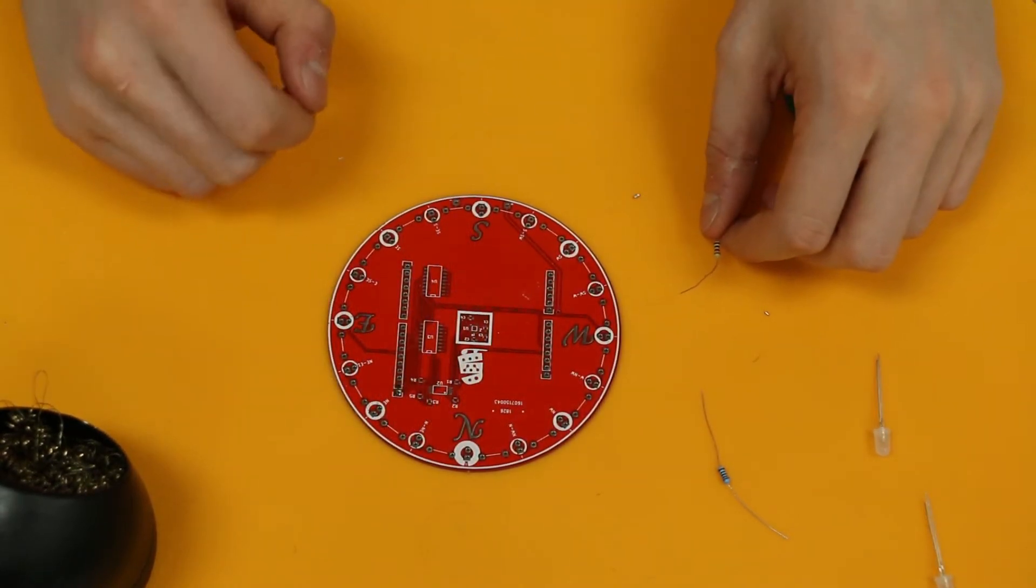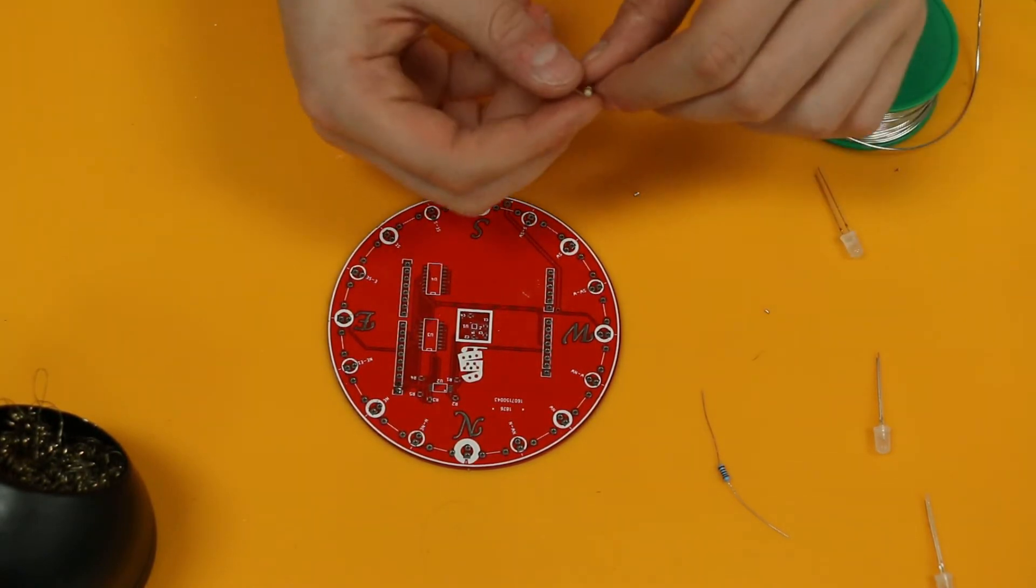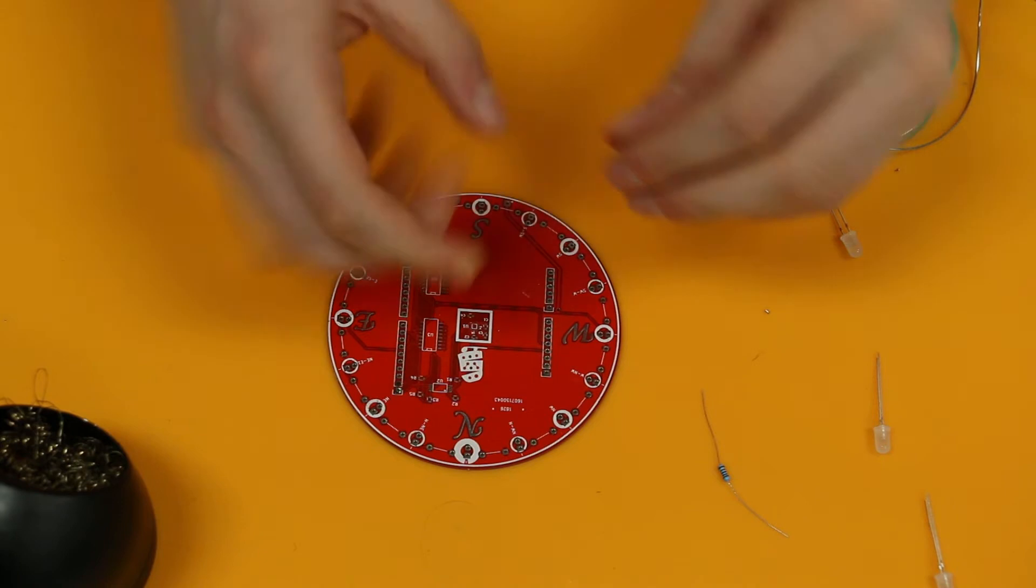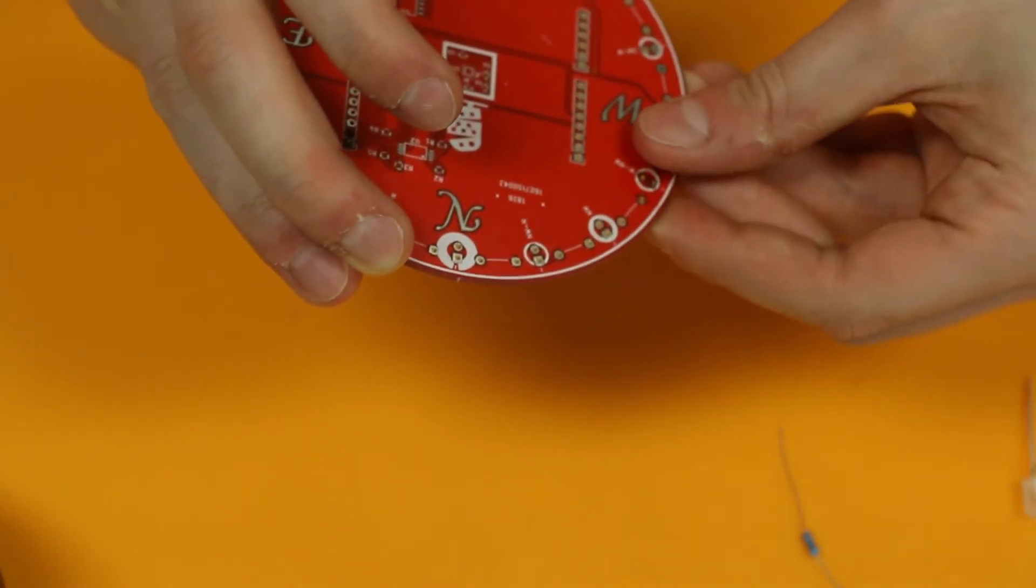So now that our soldering iron is ready to go, let's populate our board with a couple of pieces that we can solder. So for this video I just took a bunch of general components that you'll probably solder in future kits.